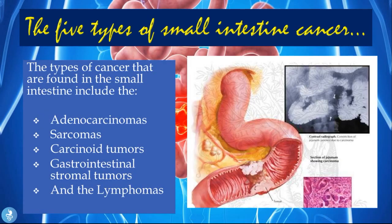The five types of small intestine cancer include adenocarcinomas, sarcomas, carcinoid tumors, gastrointestinal stromal tumors, and lymphomas.